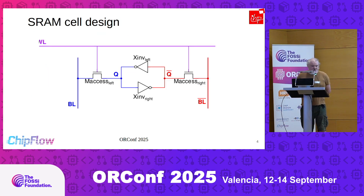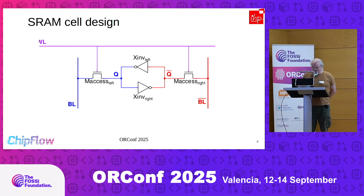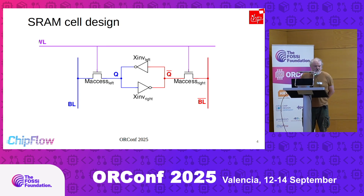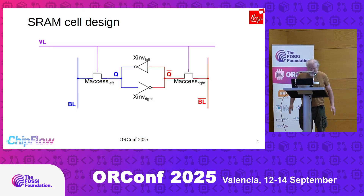The first thing is to design your SRAM cell. This SRAM cell is symmetric. An inverter has two transistors — an NMOS and a PMOS — and you have two access transistors, so six in total. Because it is a symmetric cell, you only have to design three. For each of those three transistors, you have to decide on the length and the W, so it's six parameters in total.